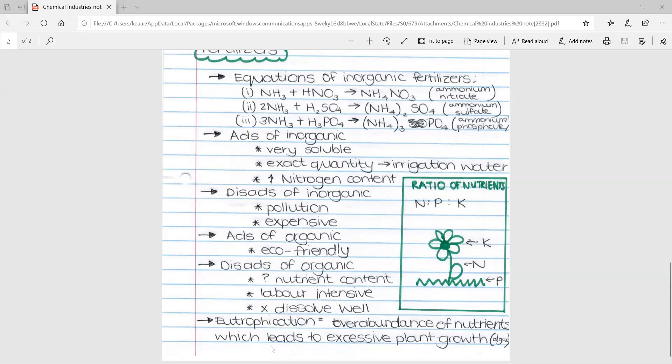Then something which comes up a lot in this section is eutrophication. This is basically the overabundance of nutrients which leads to excessive plant growth, especially algae. You'll generally find this on large masses of water where they've experienced a lot of nutrients, and this leads to the algae growing excessively and actually starts to cover the water. And this leads to some plants under the water and animals under the water to die.